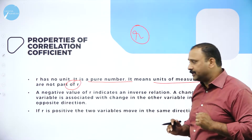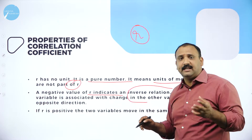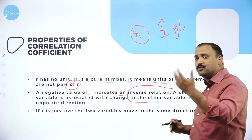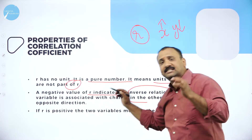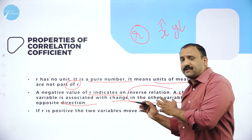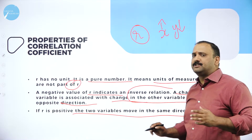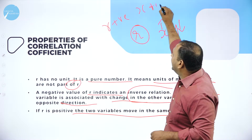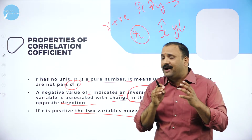A negative value of r indicates an inverse relationship. If x moves in one direction and y moves in another, we have negative correlation — a change in one variable is associated with a change in another variable in the opposite direction. If r is positive, both variables move in the same direction — if x moves up, y will also move up.